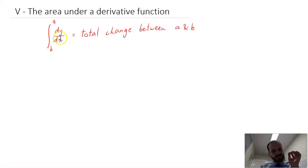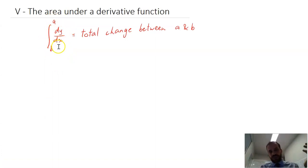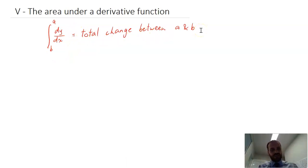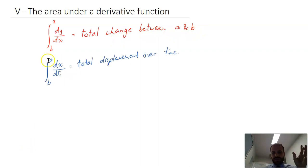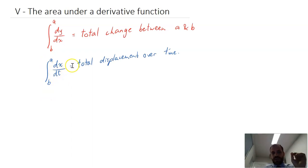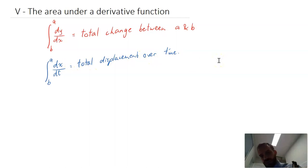To formalize this a little bit: the integral between a and b of a rate of change function, or dy/dx, is equal to the total change between a and b. Going back to our specific example, the integral between a and b of displacement with respect to time is equal to the total displacement over time a to b.